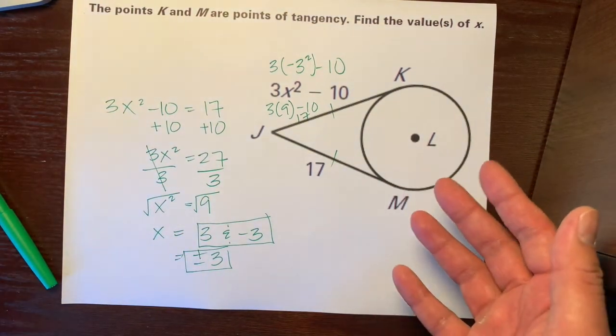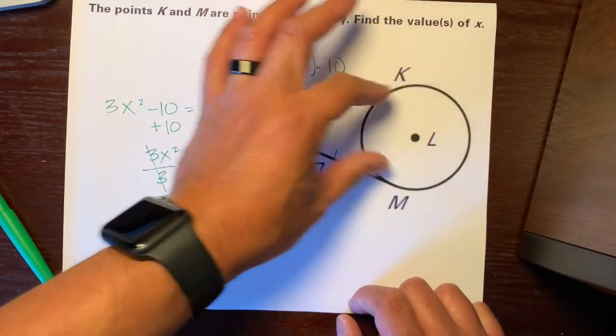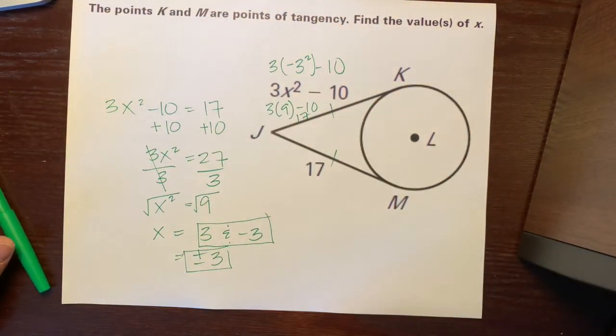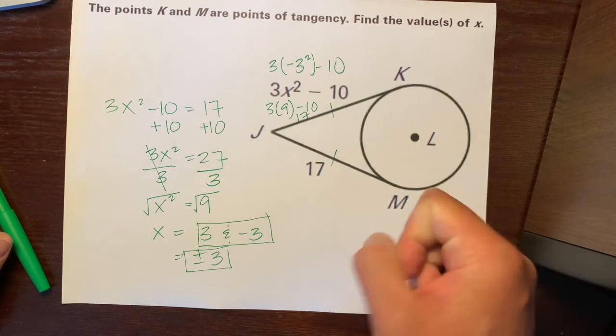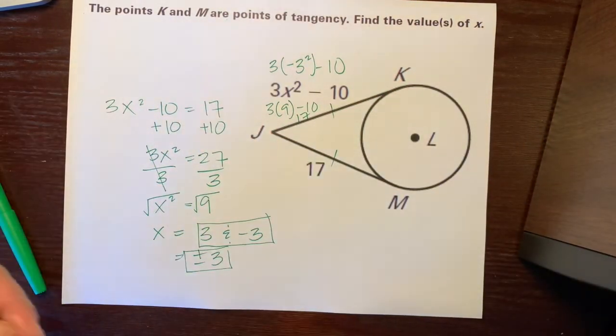Yeah. So, there's the two tangents theorem or the tangent tangent theorem. That two tangents that intersect each other are equal. They have equal measures. They're congruent to each other. So, set them equal to each other. There you go. Have a great day. Bye.